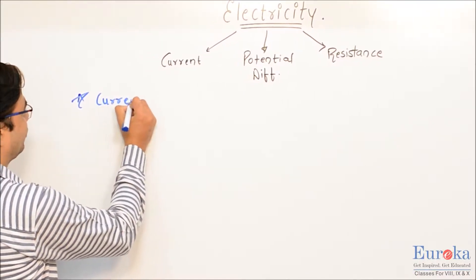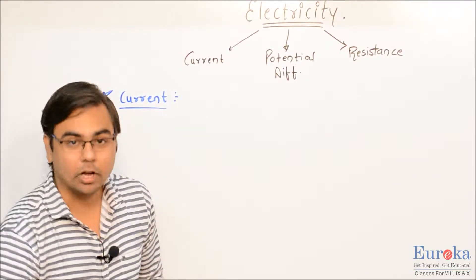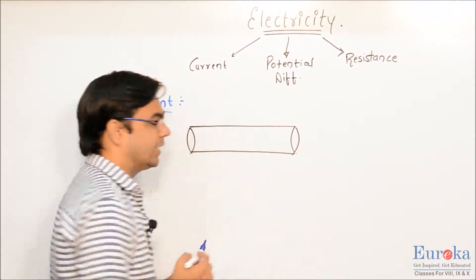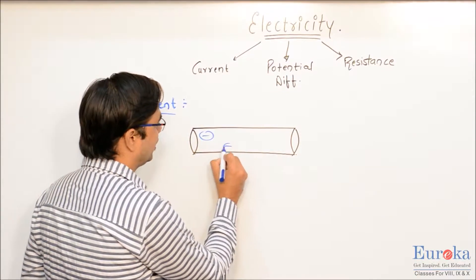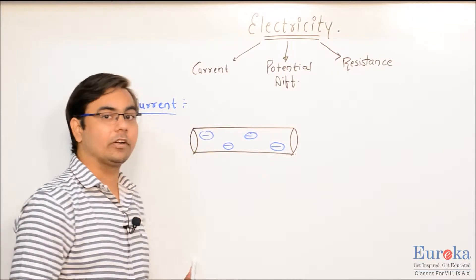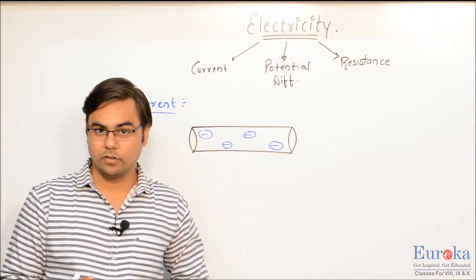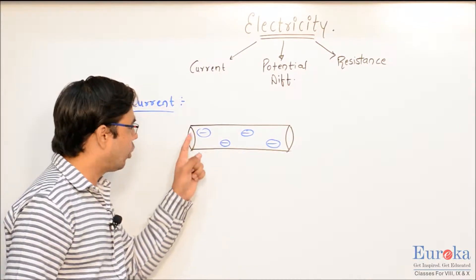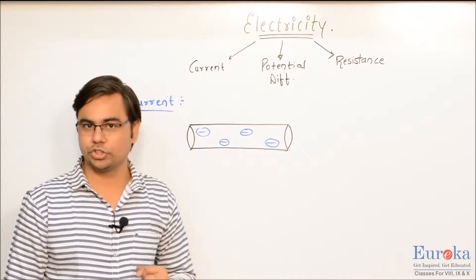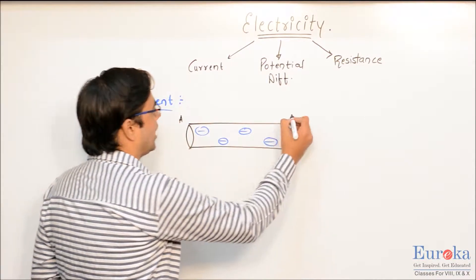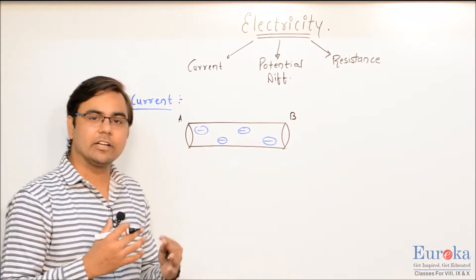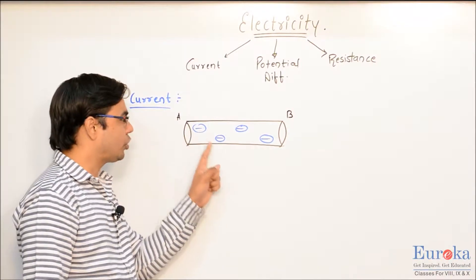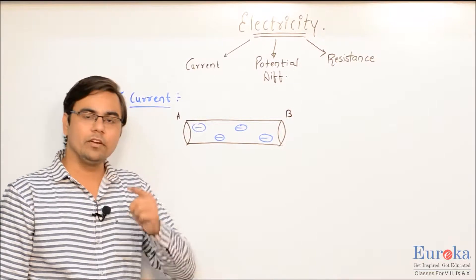To understand the concept of current, let us consider a metallic conductor. A metallic conductor is supposed to have a large number of free electrons. Inside this conductor there will be a large number of free electrons, and they will always be in a state of random motion. We will consider the ends of the rod as A and B. Because these electrons are in random motion, it will be of no use to us.